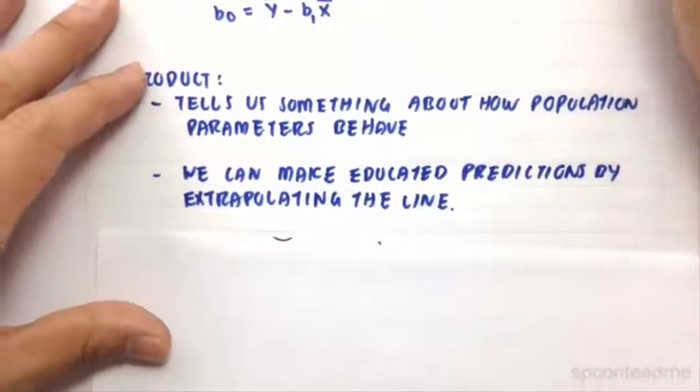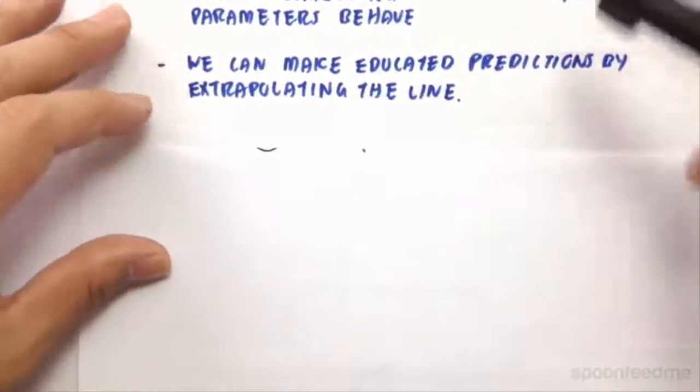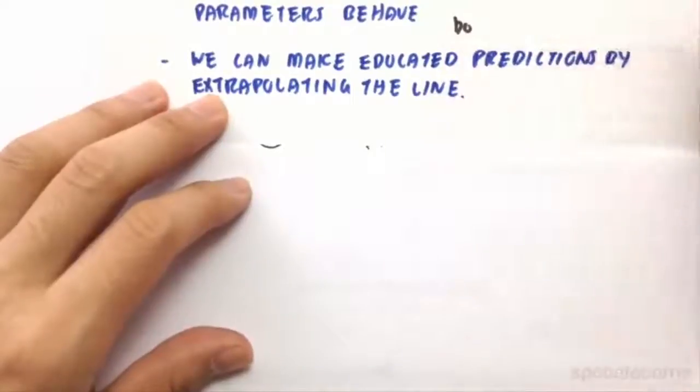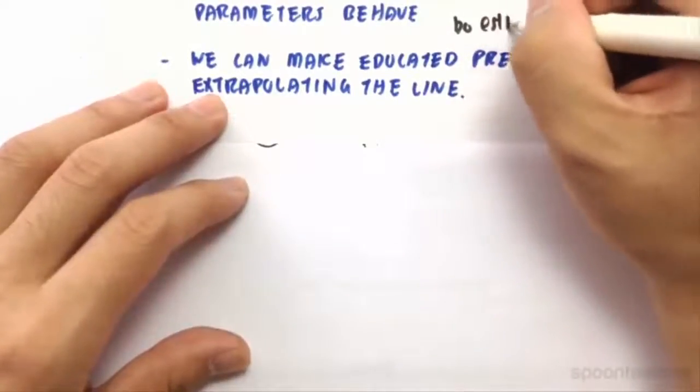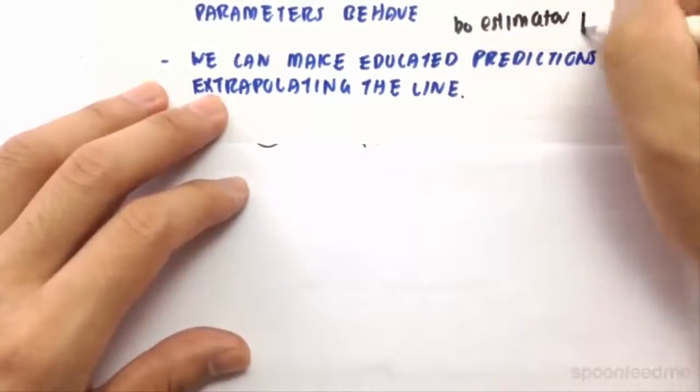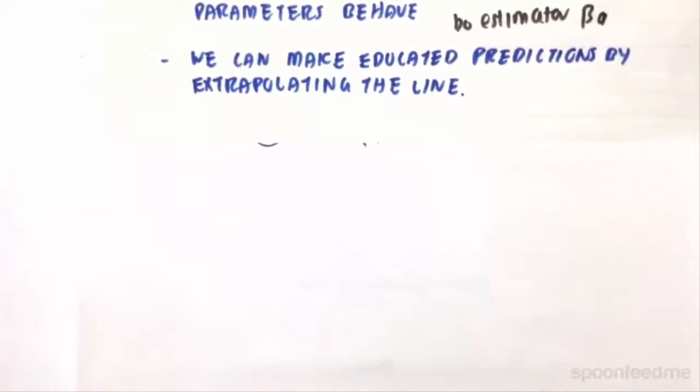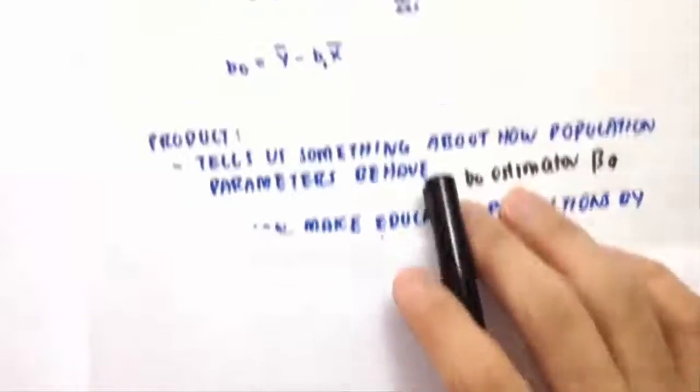So what does the product of the simple regression model do for us? Well, it tells us something about how the population parameter actually behaves. So because b0 is an estimator of beta 1, or beta 0, as a result we can relate the two together and draw some inference about it. And we can also make educated predictions about the line.